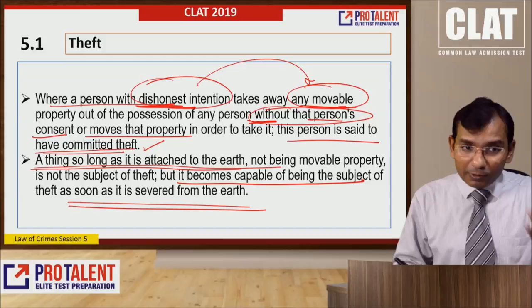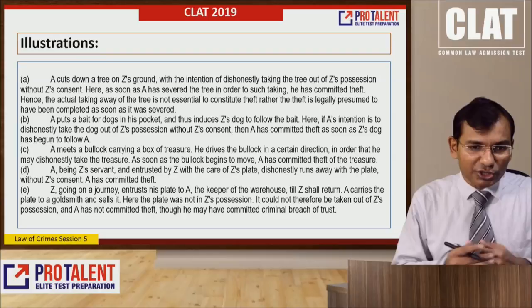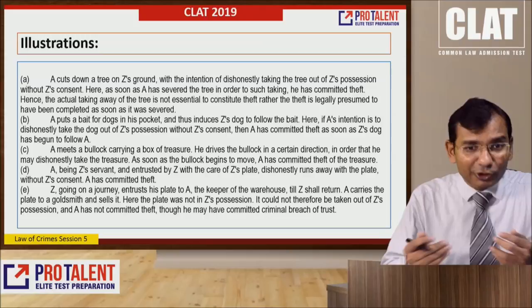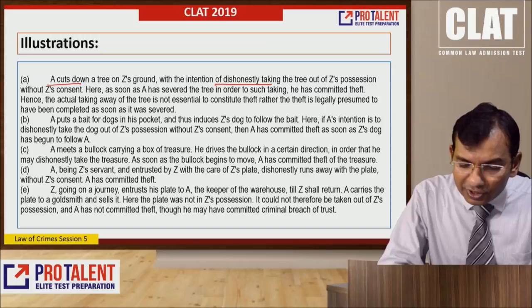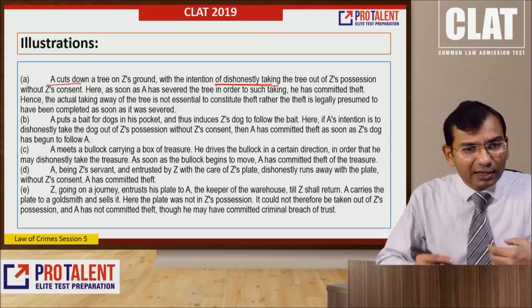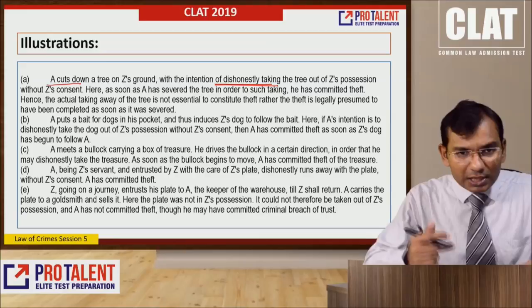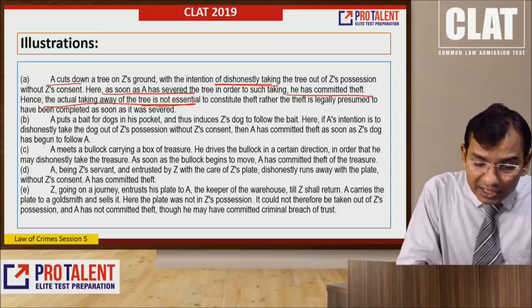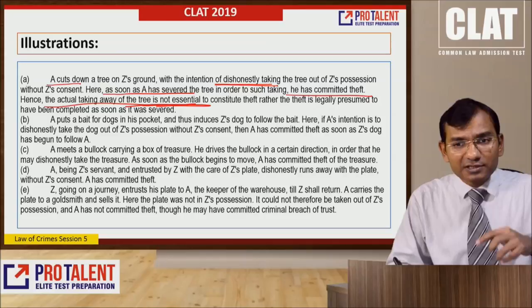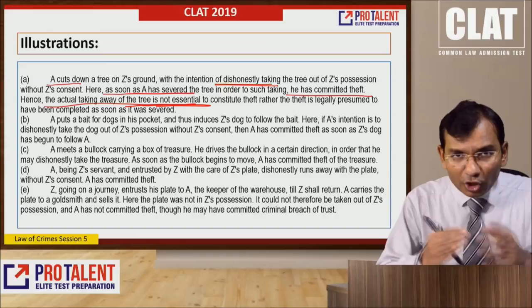Let me take some examples. I am going to explain a couple of illustrations; the rest are given for your reading — you can download the PDF and read them at home. Illustration: A cuts down a tree on Z's ground with the intention of dishonestly taking the tree out of Z's possession without Z's consent. As soon as A has severed the tree in order to such taking, he has committed theft. The actual taking away of the tree is not essential — theft is legally presumed to have been completed as soon as the tree was severed.